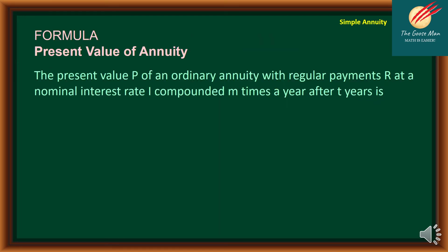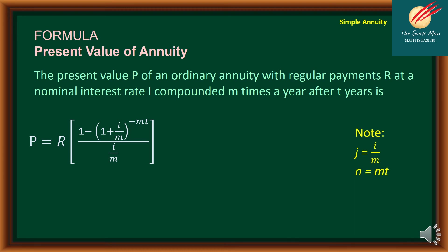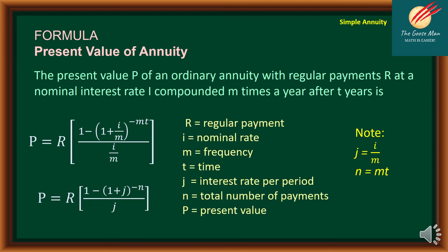Like what we did for the future value, we can use the present value annuity formula. The present value P of an ordinary annuity with regular payment R at nominal interest rate I compounded M times a year after T years is: P = R × [1 − (1 + I/M)^(−MT)] / (I/M). Alternatively, with J = I/M and N = MT, a derived formula can be used. Here, R is the regular payment, I is the nominal rate, M is the frequency, T is the time, J is the interest rate per period, N is the total number of payments, and P is the present value.